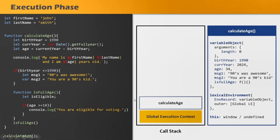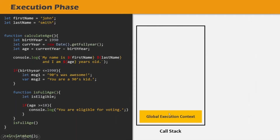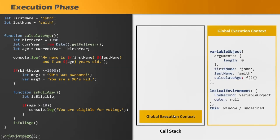The calculateAge function is now the currently executing function. After we have called the isFullage function, there is no more code to execute, so the execution of calculateAge is also complete. Once the execution of a function is complete, its execution context will be removed from the call stack. Now the execution of the global execution context will resume. The global execution context, even if its execution phase is complete, will still remain in the call stack as long as our JavaScript program is running in the browser. Only when we close the tab will the global execution context be removed from the call stack.